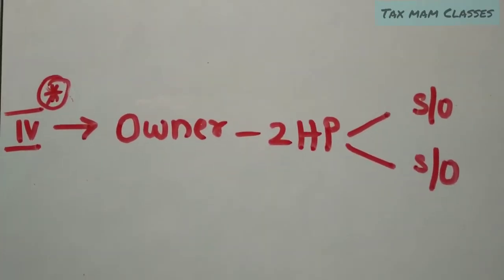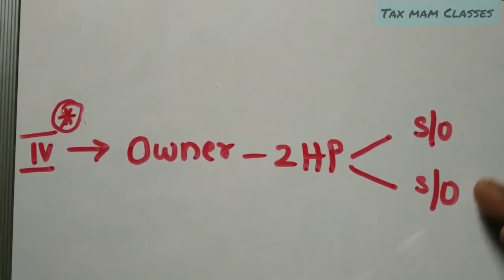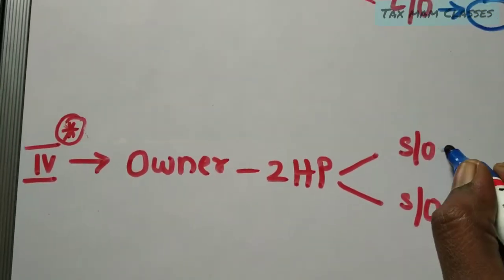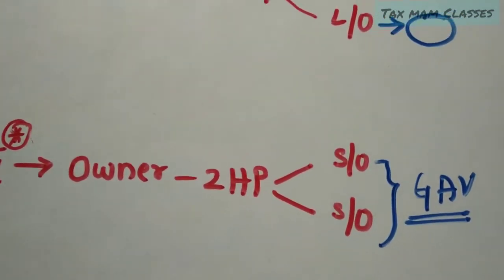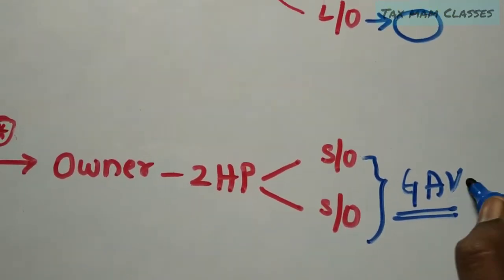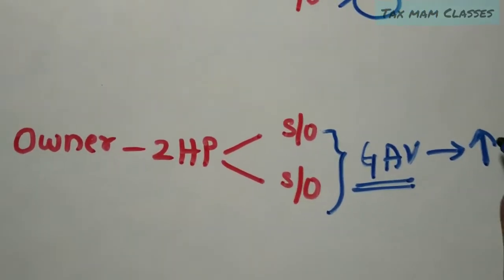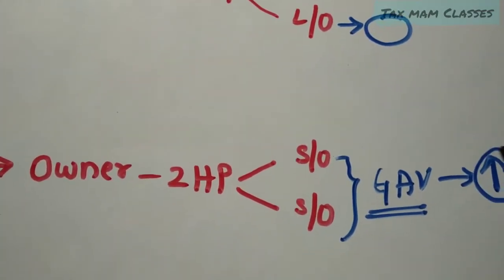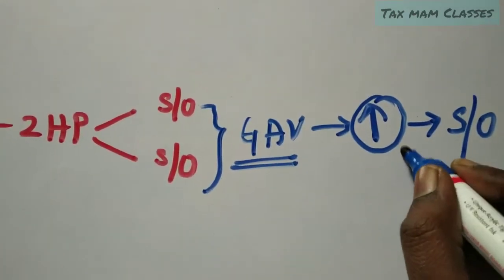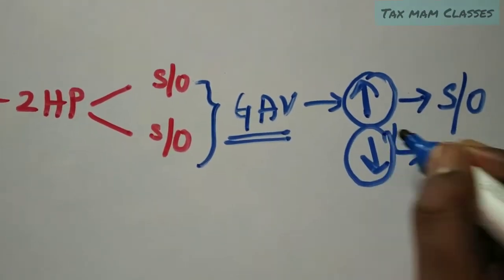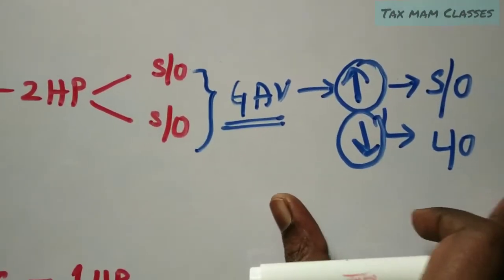The fourth situation is very important from an exam point of view. If an owner has two house properties and both are self-occupied, we must compute the gross annual value for both houses. Compare the two GAVs — whichever GAV is higher, that house property should be assumed as self-occupied, and the one with the lower GAV should be assumed as let-out property. This approach is for CA IPCC students.